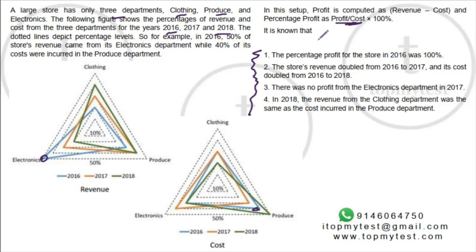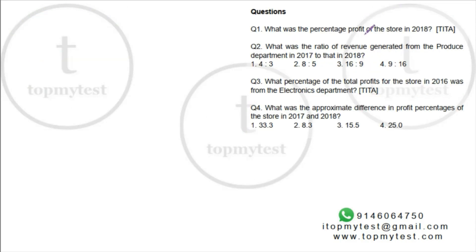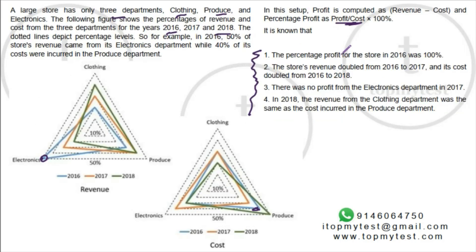All the questions are basically about profit percentages, ratios, and approximate differences in profit percentage. Everything is a ratios problem — you don't need any absolute number. You can assume any value for one of the years and you'll be able to solve every single value everywhere else.